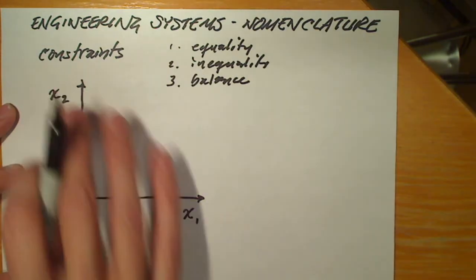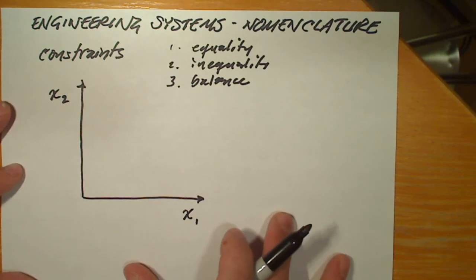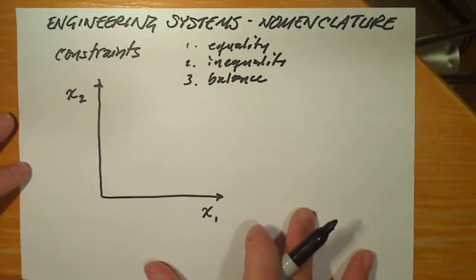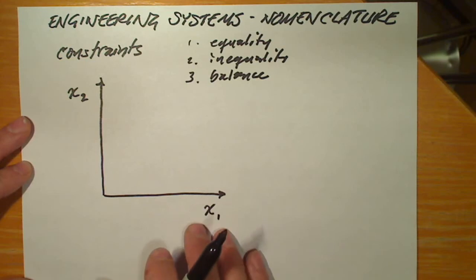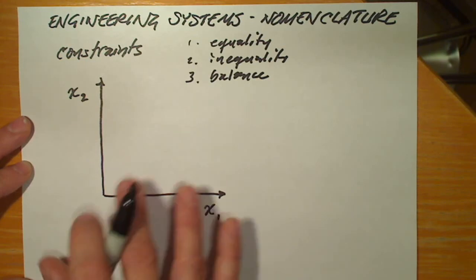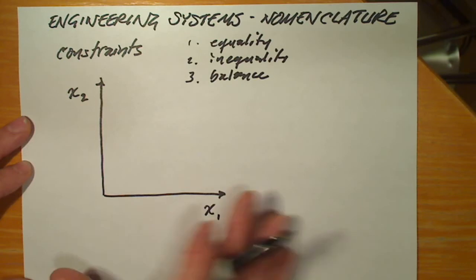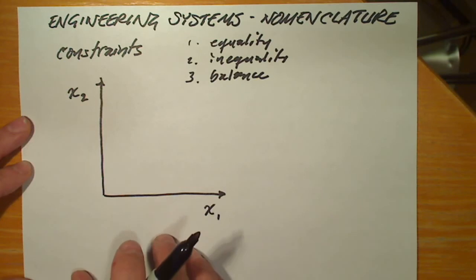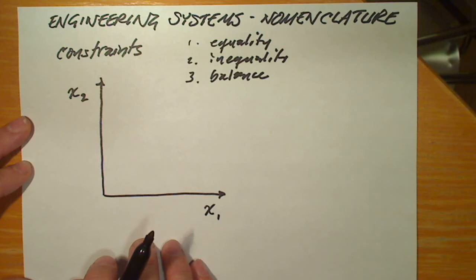Suppose x1 and x2 are different aspects of a problem over which we exercise discretion. They could be measured in inches, or they could be measured in volume, or it could be a material selection problem — some physical representation of our design.